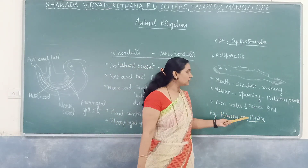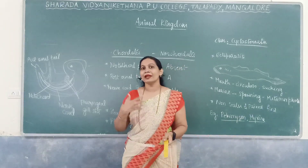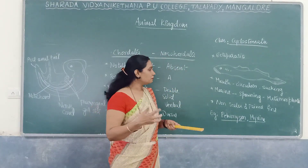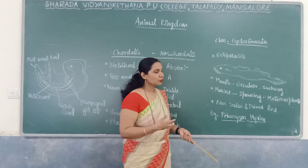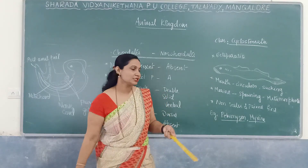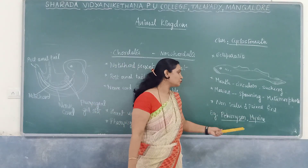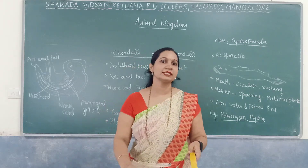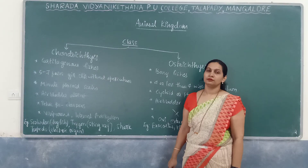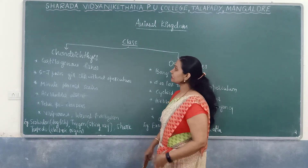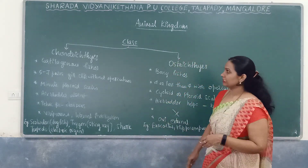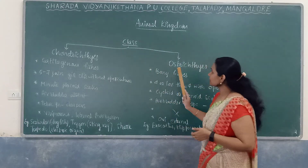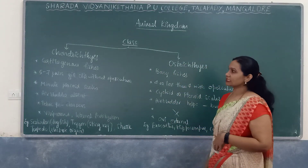Members of Cyclostomata are blood-sucking, flesh-eating organisms. The two main examples are Petromyzon and Myxine. Next, the classes under Pisces are Chondrichthyes and Osteichthyes. Chondrichthyes are cartilaginous fishes — exclusively marine, large, predatory fishes. Osteichthyes are bony fishes.